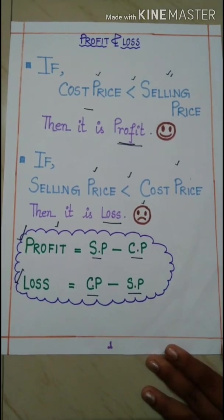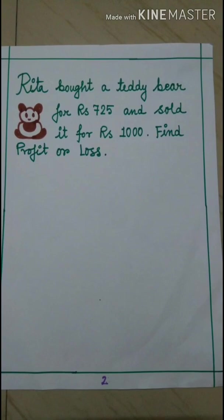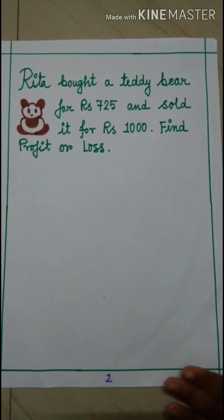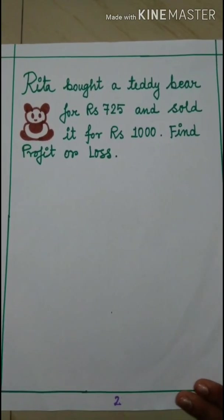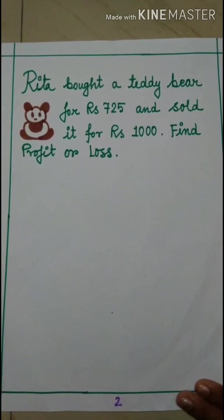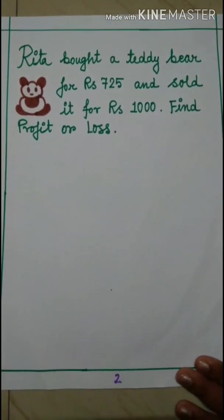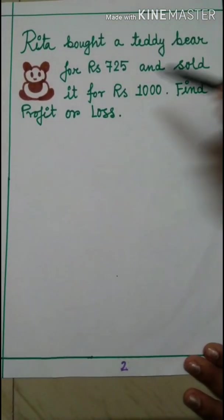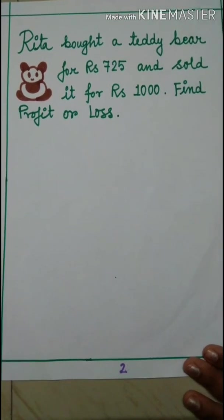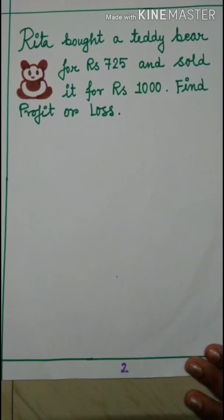So here comes our first sum. We can see the first sum. Rita bought a teddy bear for Rs 725 and sold it for Rs 1000. Find profit or loss.